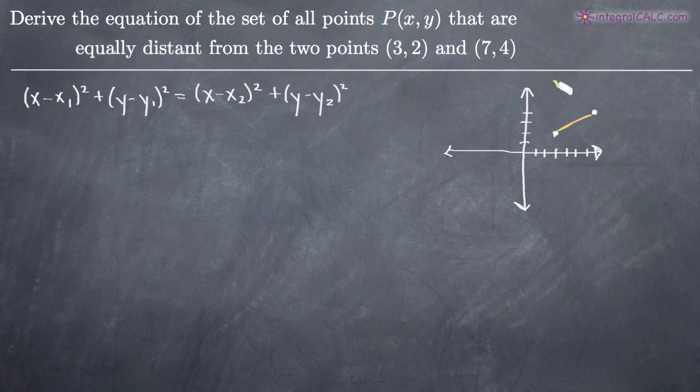So in other words, the line that is completely perpendicular to this orange segment here. But this line here, these points, if you imagine all the points along this line, they are equally distant from the two points here.